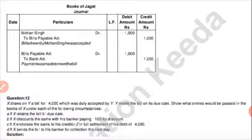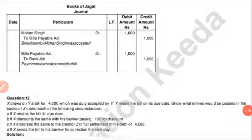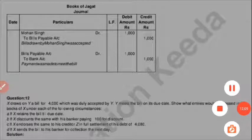Keep in your mind whenever you are preparing the journal: very first thing is the due date should be correct. Also, in whose journal you are preparing the entry — in whose books — that person's own account will not be written as debit or credit. Their own name will not be written in their own books. Note down all these questions in your notebook and try to solve more and more questions related to bills of exchange. Thank you students, bye, take care.